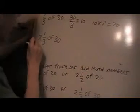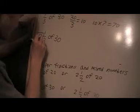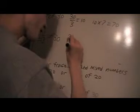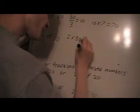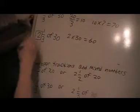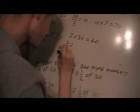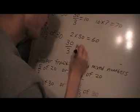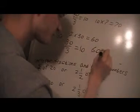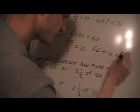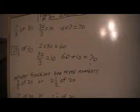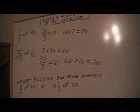Remember, multiply this number here by the amount, that's 2 times 30 which is 60. Divide the 30 by 3, I get 10, add these up, 70. So you can use methods for both a mixed number and an improper fraction.